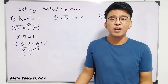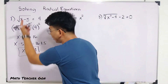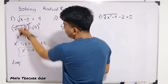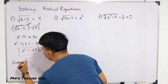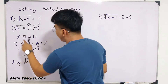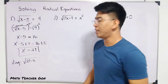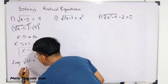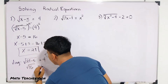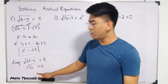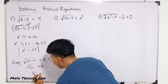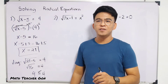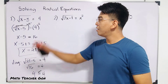Now, if you want to check whether your answer is correct, let's do the checking for this equation. Replace x by 21 in the original equation: the square root of 21 minus 5 is equal to 4. Simplifying 21 minus 5 gives 16, so we get the square root of 16 is equal to 4. The square root of 16 is 4, and as you can see, they are equal — meaning the value of x is correct. It's that simple. I hope you now understand the method for solving the first radical equation.